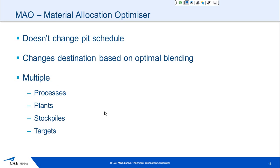Once you've run the schedule, everything has assumed that the material is processed in the year that it is mined. With MAO, the Material Allocation Optimiser, the pit will still be mined in the same sequence, but we are able to change destinations for optimal blending. We're able to have multiple processes, plants, stockpiles, and targets. I'll just quickly go through some of those settings, and then we'll go into the demo.